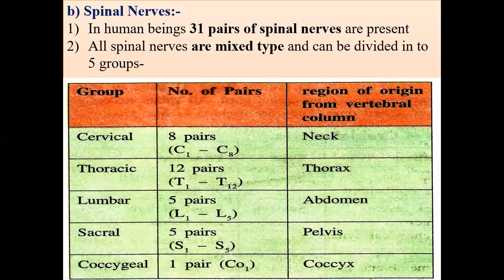Spinal nerves represent the second part of our peripheral nervous system. These are the nerves arising from the spinal cord. The nerves arising from the brain are called cranial nerves, while the nerves arising from the spinal cord are called spinal nerves. In human beings, there are 31 pairs of spinal nerves.